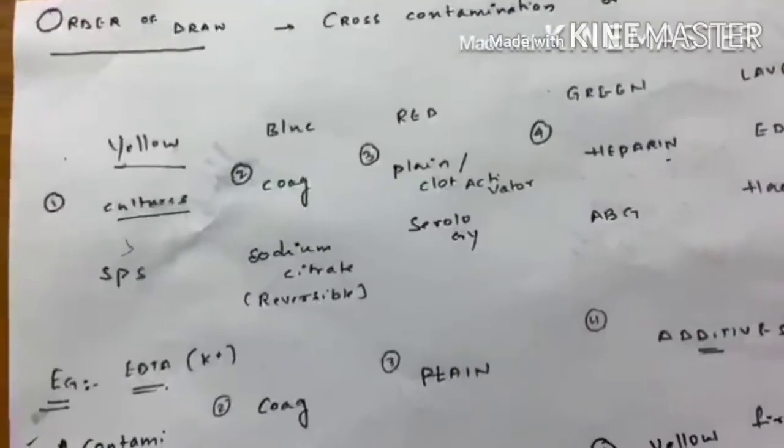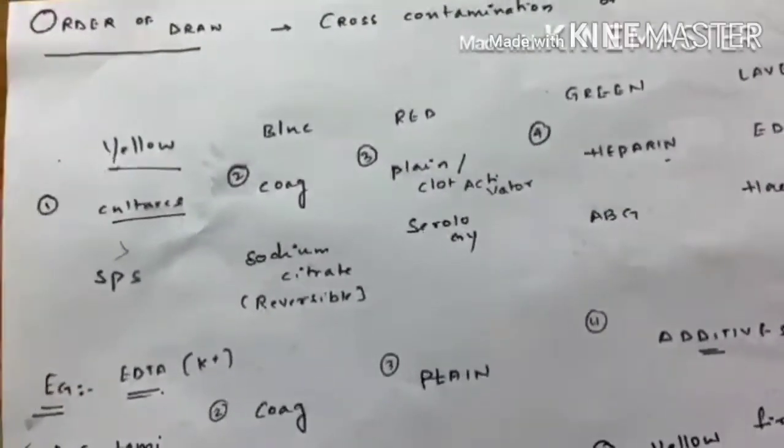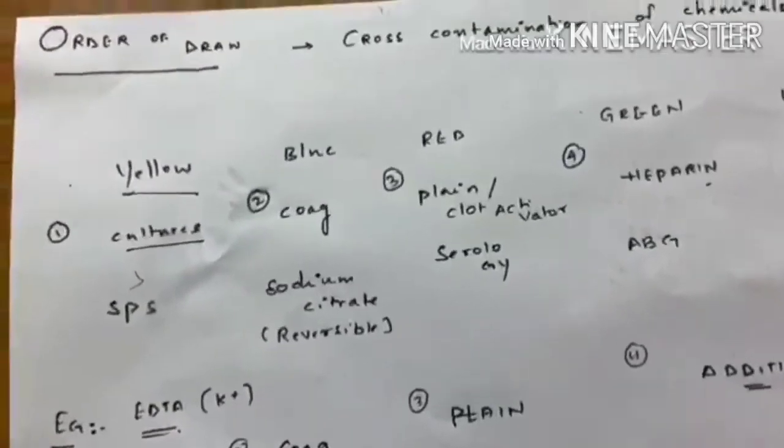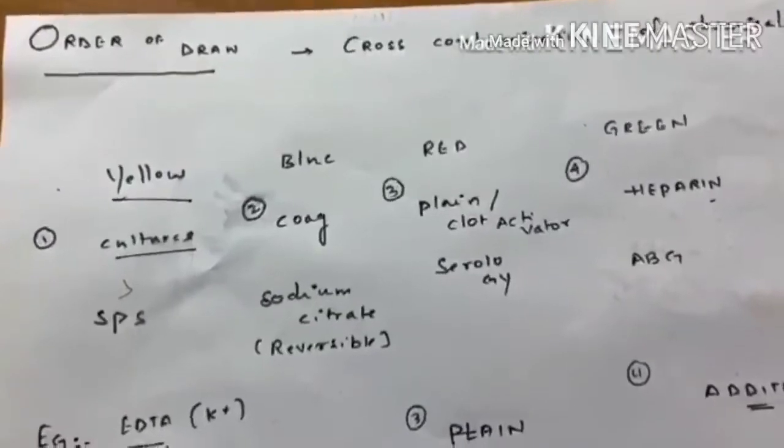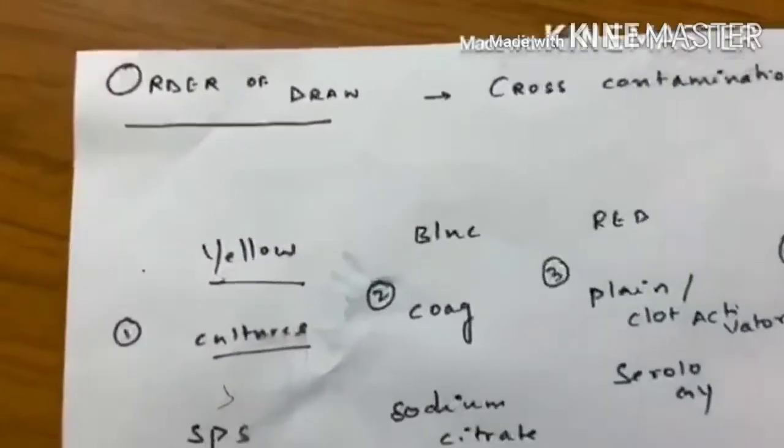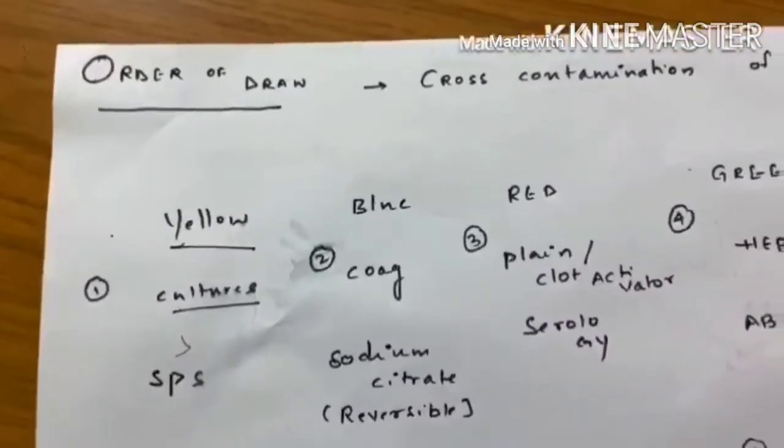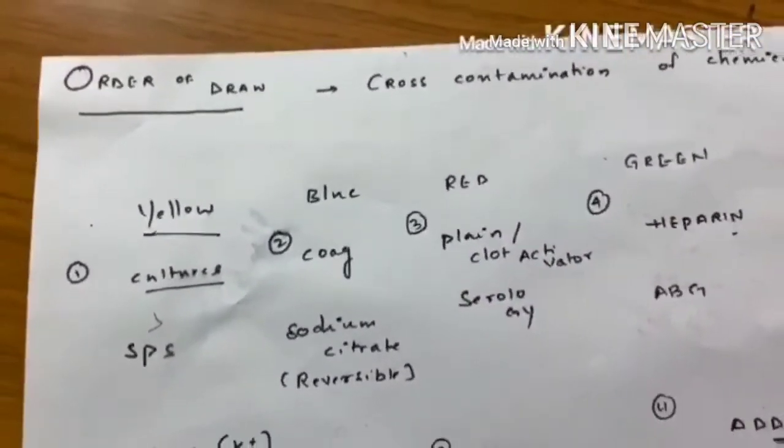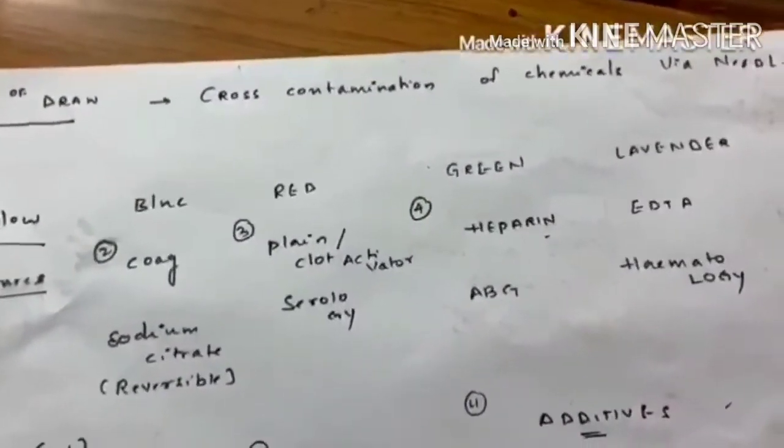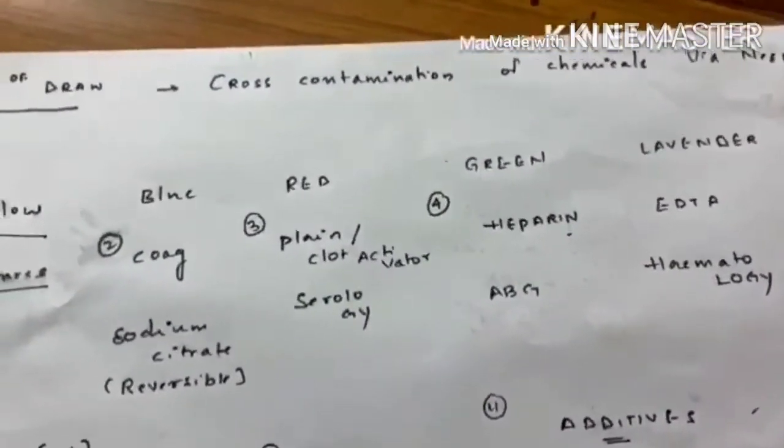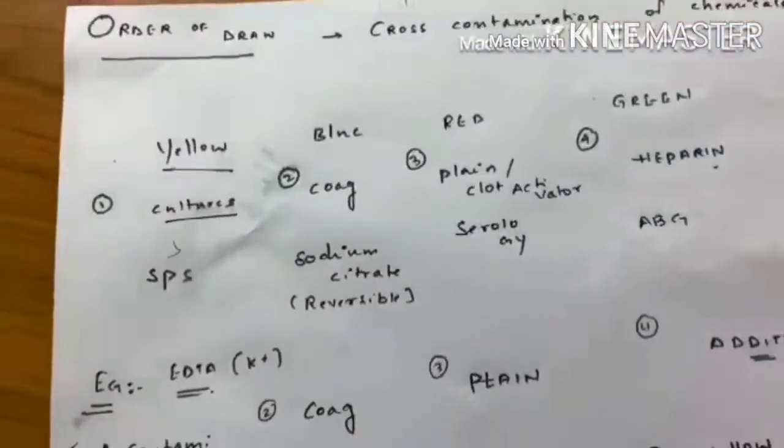Though not asked till date, it is mentioned regularly in textbooks, which is order of draw of vacutainers. It may be expected as a future question. Order of draw of vacutainers is important. Why? Because if you don't draw in particular order, there may occur cross contamination of chemicals present in bottles via the needle. What is the order of draw?